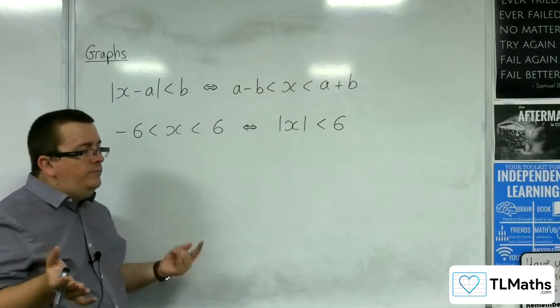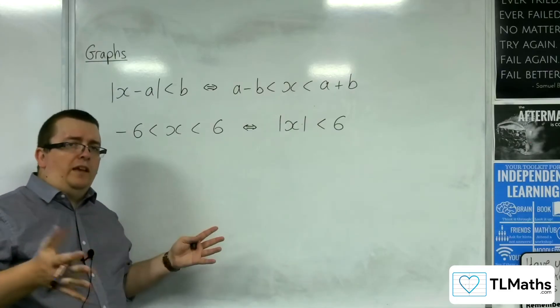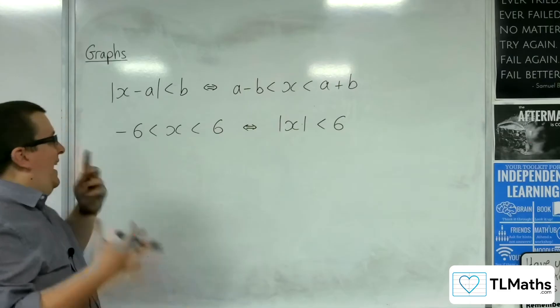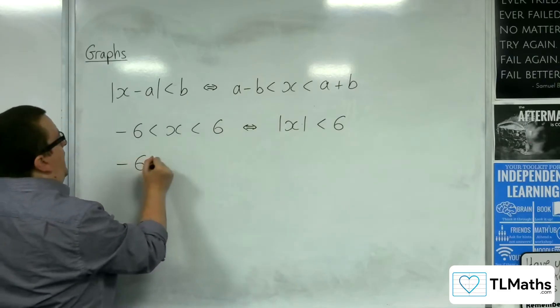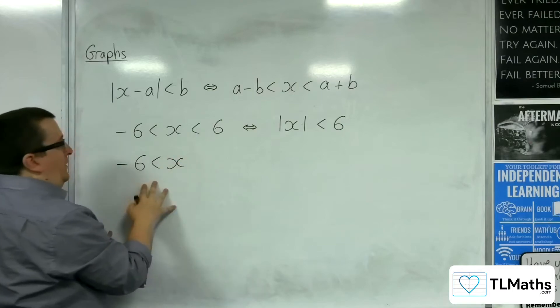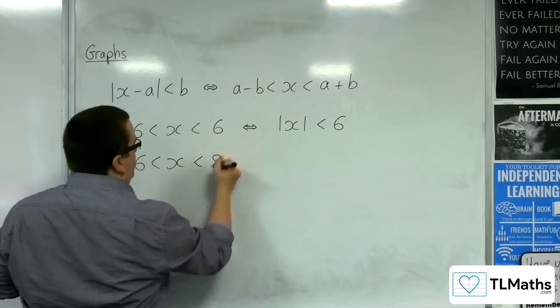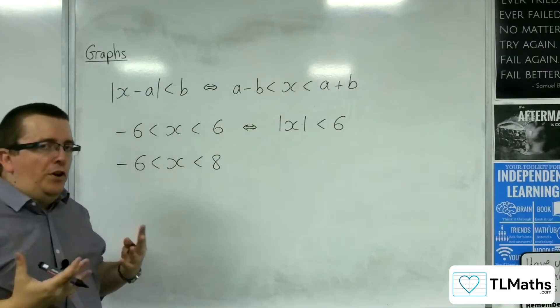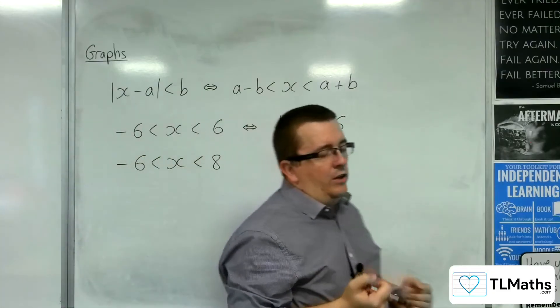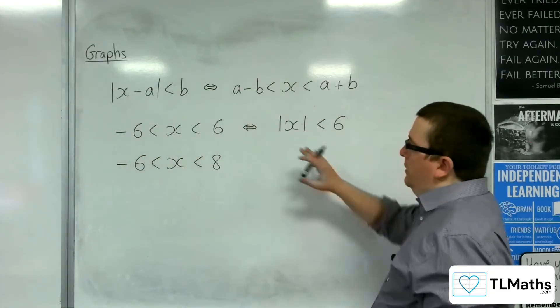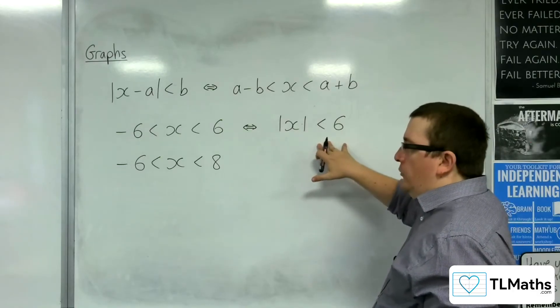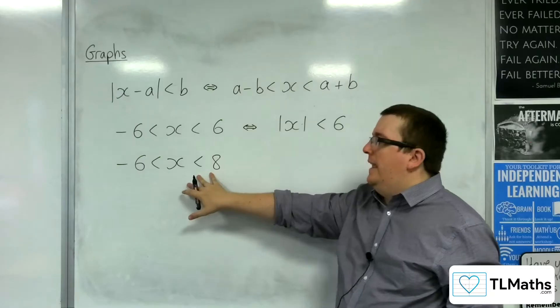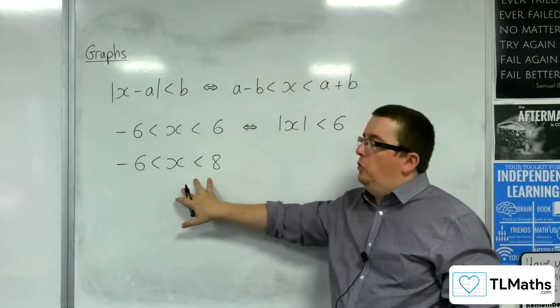That's a very basic example. How about if I changed this and I went with x was greater than minus 6 still, but now less than 8. How could I write that as a modulus inequality? Because I can't go directly to this. So I need to figure out a way of how I can get it into a modulus inequality form.